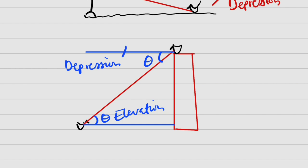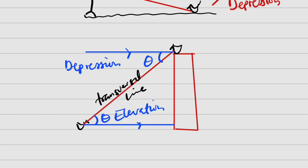And you can see that these two horizontal lines are said to be parallel. So if they are parallel, this line of sight will be a transversal line. The line of sight is now the transversal line, and these two angles are said to be alternate angles, and alternate angles are equal. So when you have the same experiment where you have to deal with both angles of elevation and depression, they are said to be equal. Now let us go through some questions.